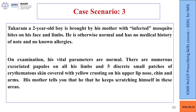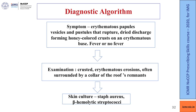Case 3: Tukaram, a 2-year-old boy, presents with infected mosquito bites on his face and limbs. On examination there are numerous excoriated papules on all limbs and five discrete patches of erythematous skin covered with yellow crusting on his upper lip, nose, chin, and arms, which are itchy. If the symptom complex shows erythematous papules, vesicles, and pustules that rupture and dry to form honey-colored crust on an erythematous base, with or without fever, the diagnosis is impetigo. Skin culture may reveal Staph aureus or beta-hemolytic streptococci.